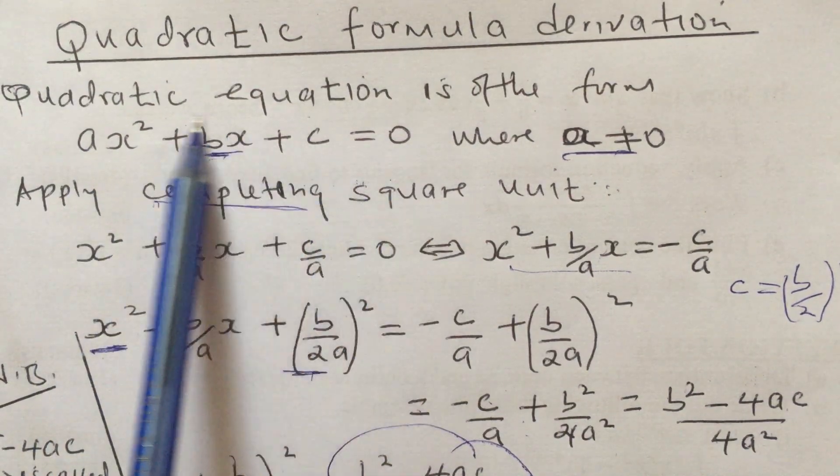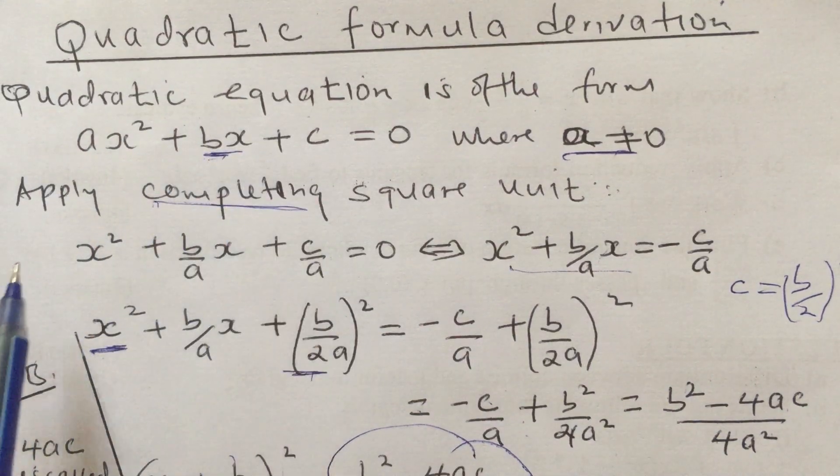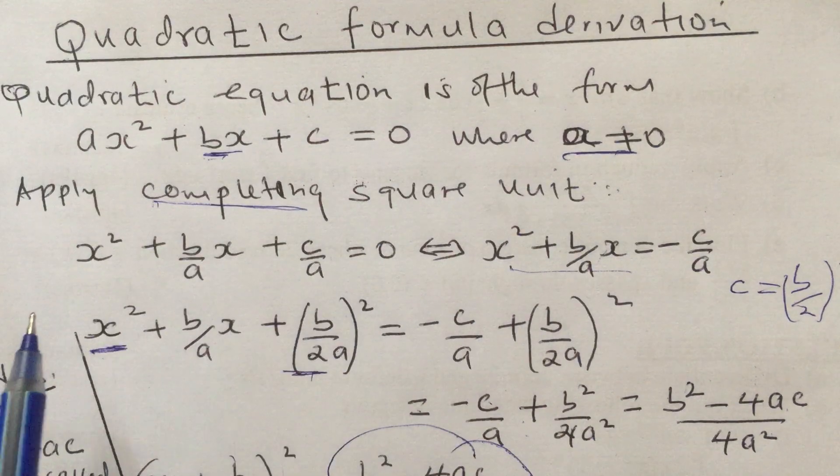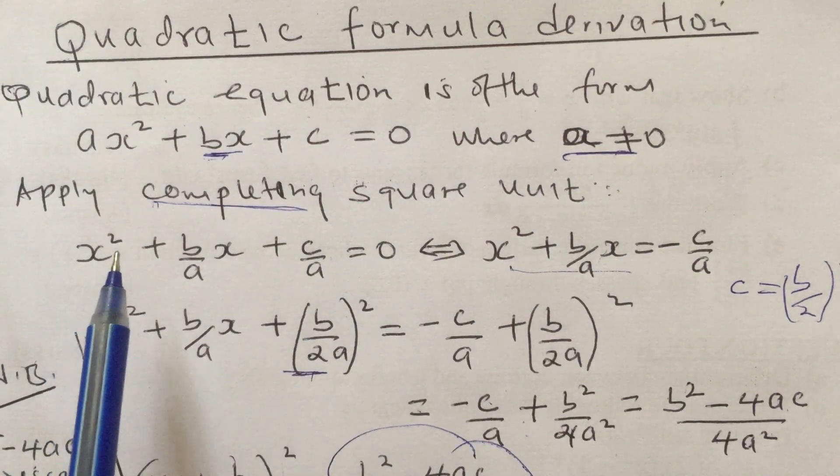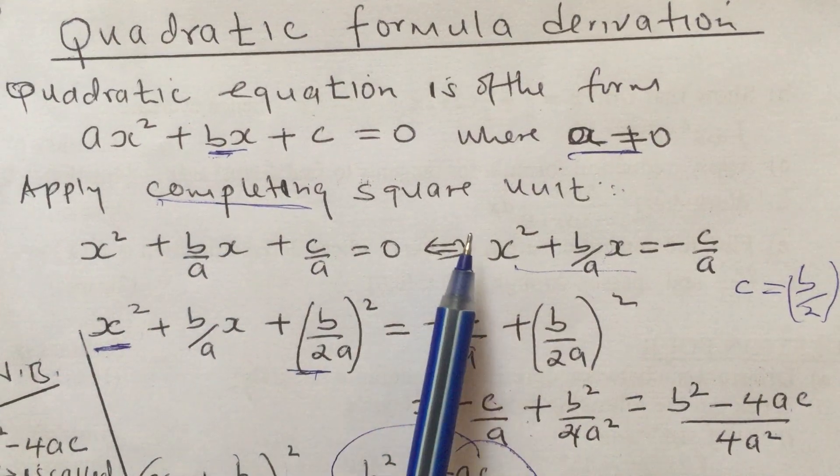Notice that a should not be zero. The reason is if a is zero, then the equation reduces to a linear equation. Now we can apply our completing square method to come up with this quadratic formula.